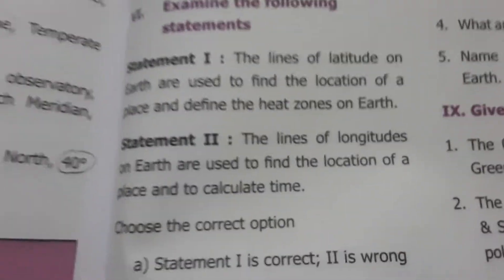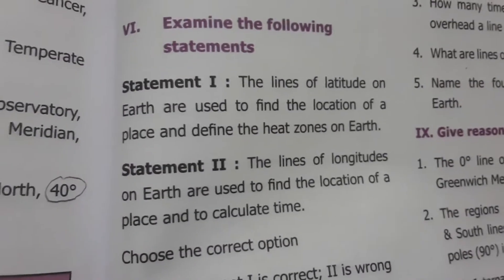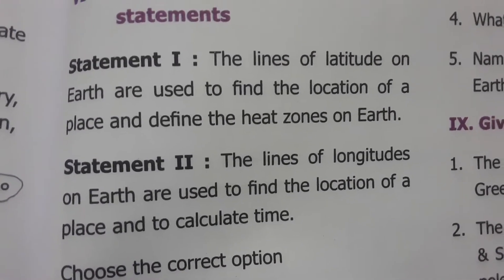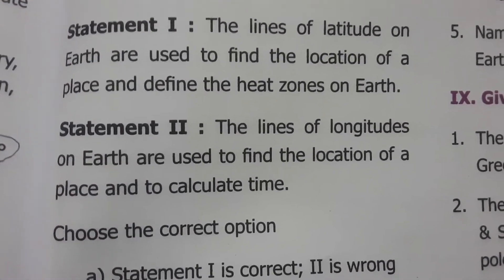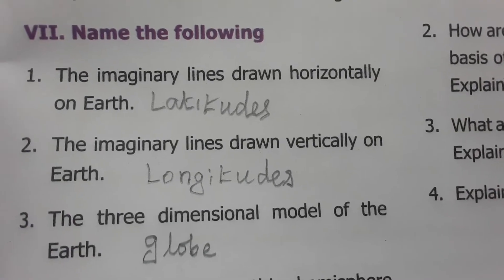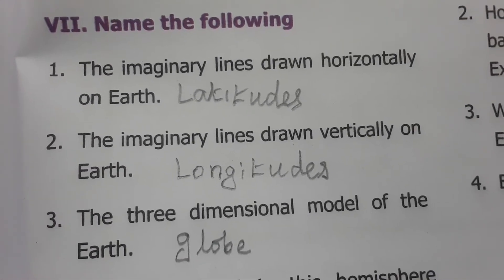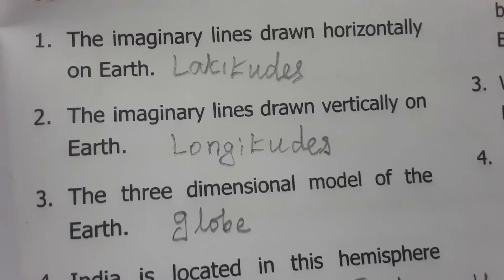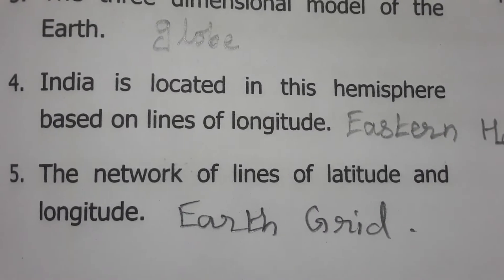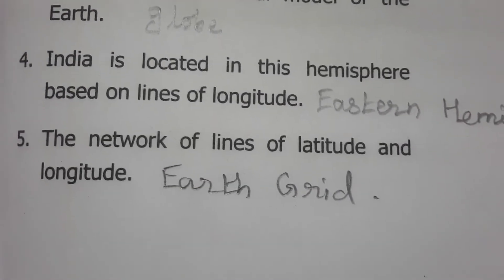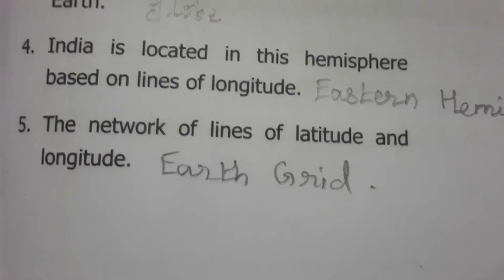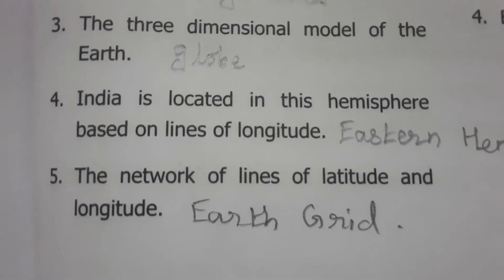Examine the following statements: The lines of latitude on the Earth are used to find the location of a place and to define the heat zones of Earth — this is correct. Latitudes are used to define heat zones, whereas longitudes are used to calculate time. Both statements are correct. Name the following: Imaginary lines drawn horizontally on Earth are latitudes; drawn vertically are longitudes. The three-dimensional model of the Earth is the globe. India is located in the Eastern Hemisphere based on lines of longitude. The network of lines of latitude and longitude is called the grid.